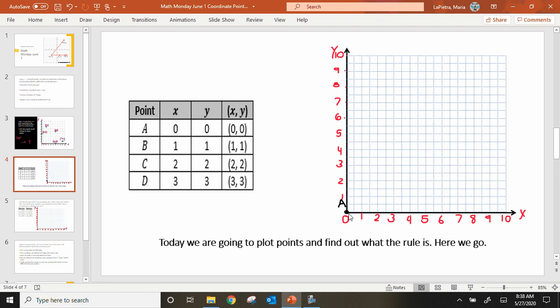B, one comma one. I go over one, and I go up to one. That's where I plot my point. Over one, up one. We're going to label that B. C, two comma two. Over two, up two. I'm plotting my point. I'm going to label that C. And then there's D. Three comma three. Three over, up three. We're going to label that D.